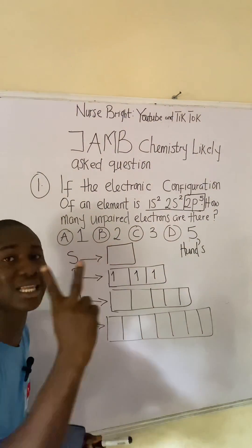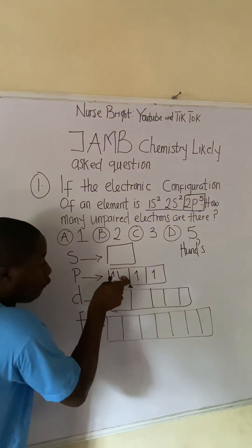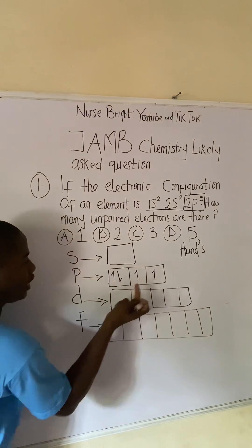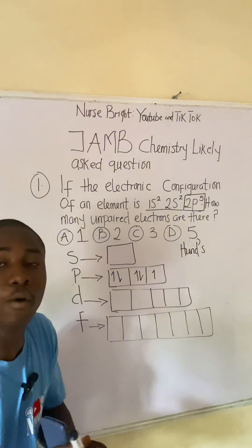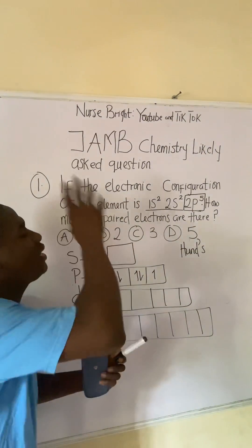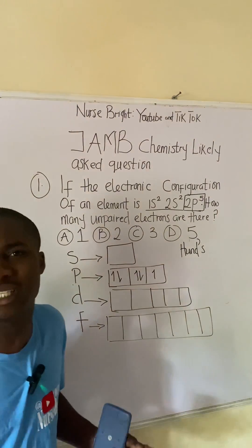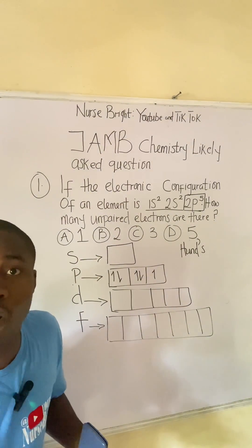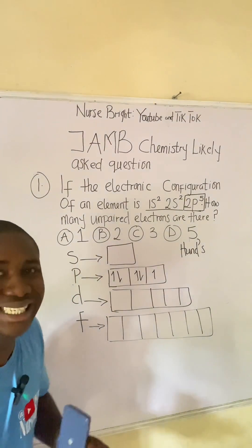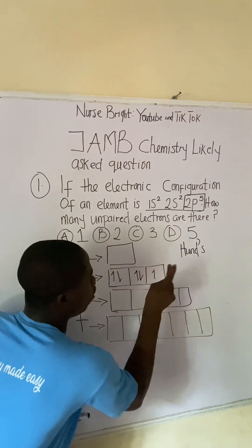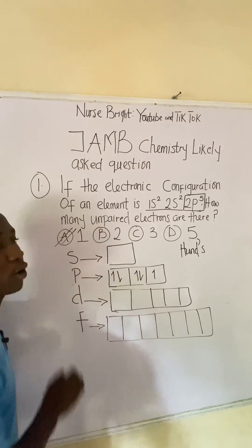We fill another electron — that's four — and the last one makes five. So we have filled in all five electrons: one, two, three, four, five. Now, how many unpaired electrons can you see? You look for the ones that are unpaired. Looking at this solution, there is just one unpaired electron. The other two pairs are paired, so we have one unpaired electron.